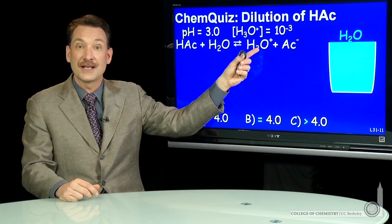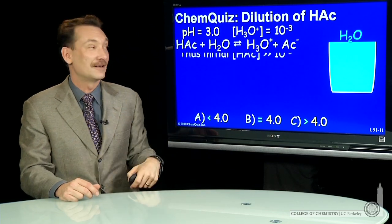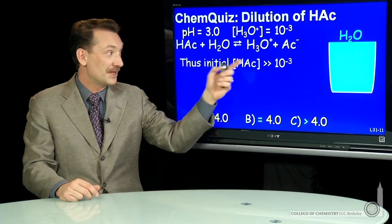So to get a product concentration of 10^-3, we have to have a much higher reactant concentration.